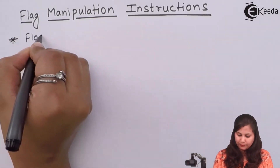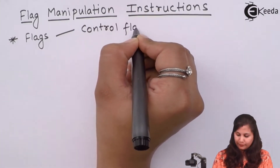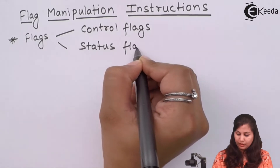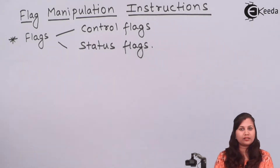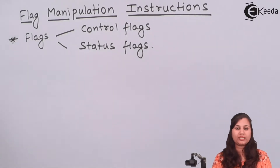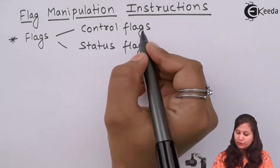These flags are of two types: control flags and status flags. The control flags are used to provide various control signals in the microprocessor — if you want to enable or disable those control signals, we use the control flags. Status flags tell us about the status of the result, that is whether the result is positive or negative, whether zero is obtained, or whether an even or odd number is obtained.